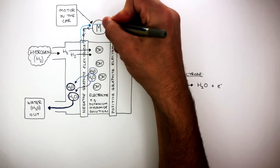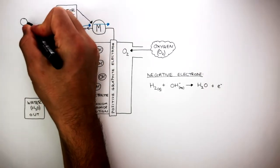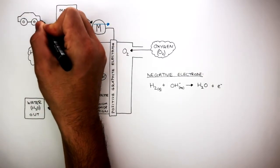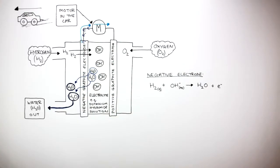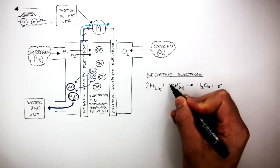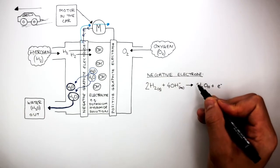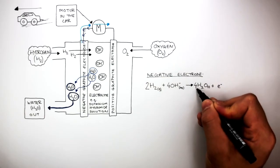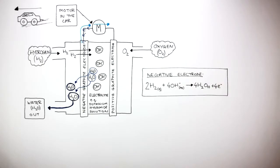These electrons flow through the motor, and it is this flow of electrons that allows the car to drive. We then balance the equation to show how there are two hydrogen molecules reacting with four hydroxide ions to form four water molecules, and four electrons have been lost.